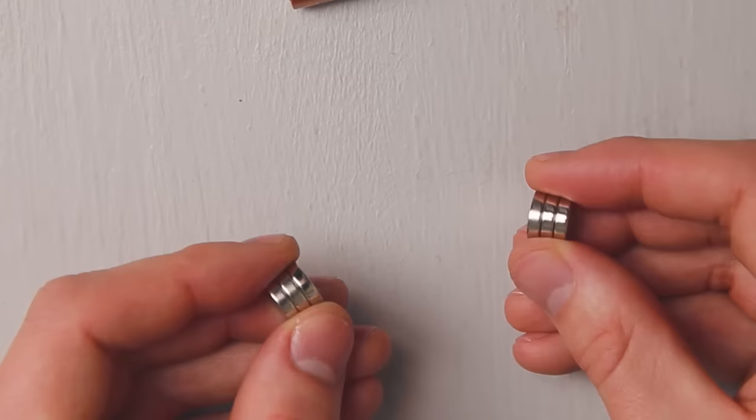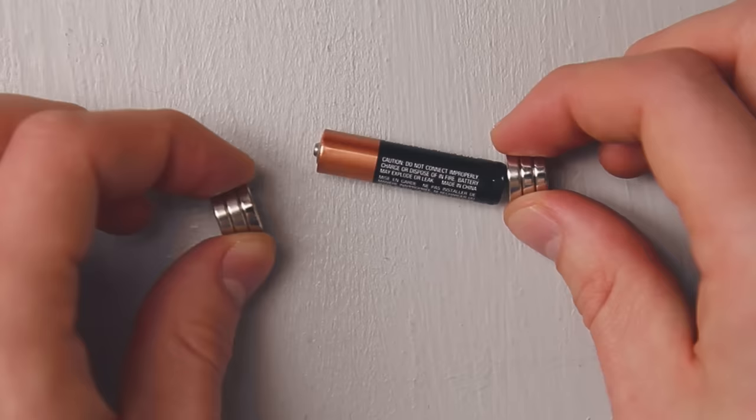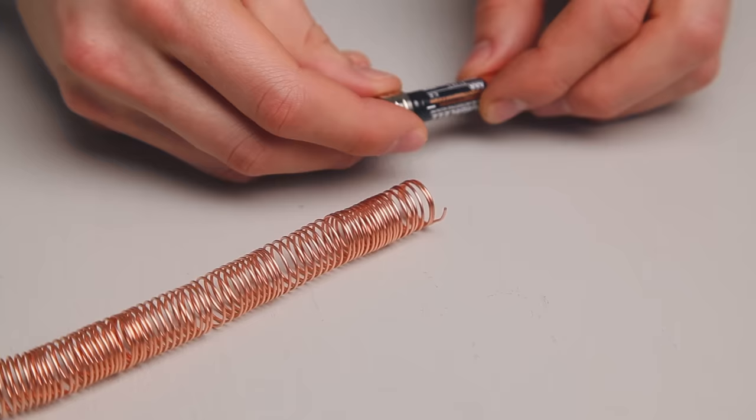Split your neodymium magnets into two stacks of three. Orient them so they repel each other, and then stick each stack to an opposite end of the battery.